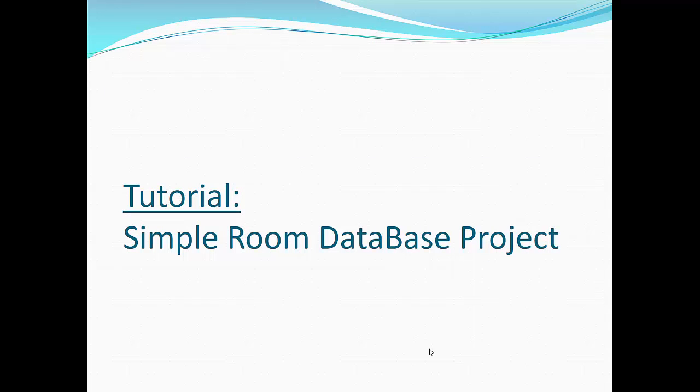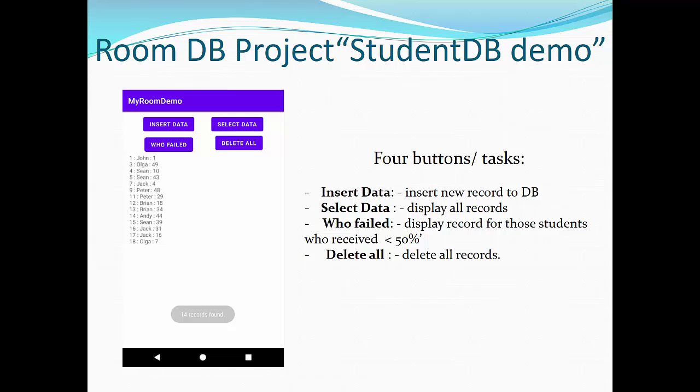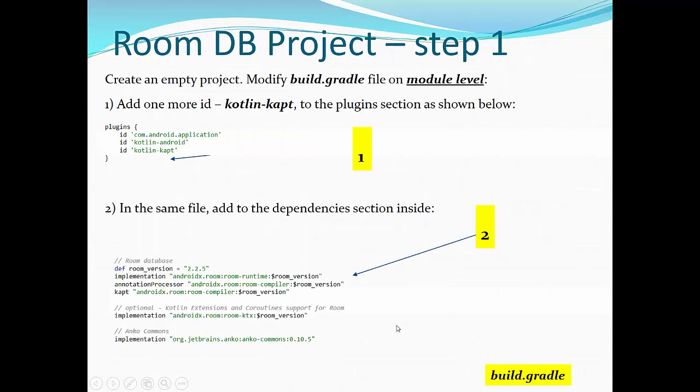The next is a tutorial: simple Room database project that you will be doing individually today from scratch. The Room database project will model kind of like a student database demo. In this project, you will have four buttons task. One button will insert data. For simplicity, we will be inserting a random student's name and random marks between 0 and 100. Select data will display all records. Who failed button displays records for those students who received less than 50%. You see the result. Right now, we have 14 records found that has less than 50% in their marks, but their ID is preserved in that order, how they have been recorded in database.